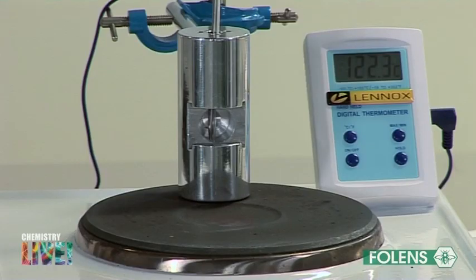Allow the aluminium block to cool and repeat the experiment using a second sample of benzoic acid. Take the average of the two readings as the melting point range of the benzoic acid. Repeat the experiment with an impure sample of benzoic acid and compare the results that you have obtained.